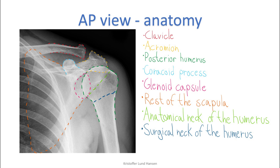I have marked the two necks of the humerus that you should know of. The light green one is the anatomical neck while the dark blue is the surgical neck. The surgical neck is named so as this is the place where most common fractures of the humerus occur. Not a part of the shoulder, but during the exam you should also take a quick look at the lungs and ribs, as it is not too uncommon to suffer from a pneumothorax and/or some broken ribs when you get trauma to the shoulder.